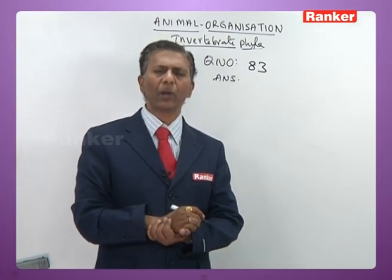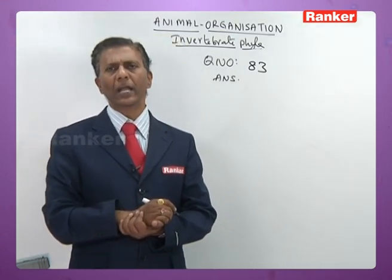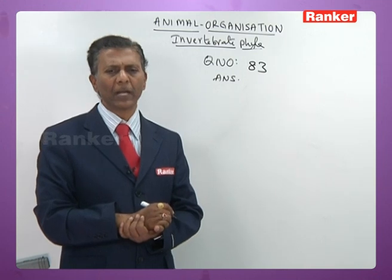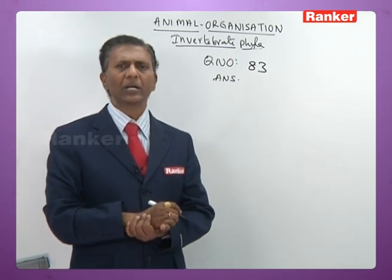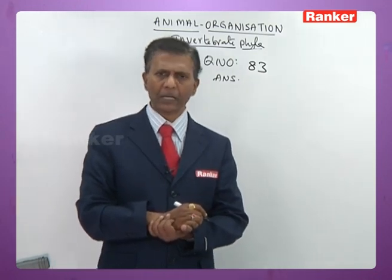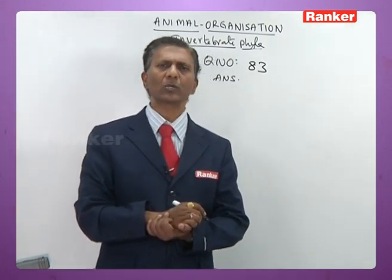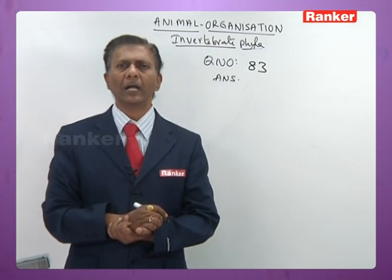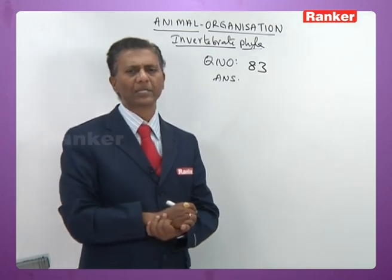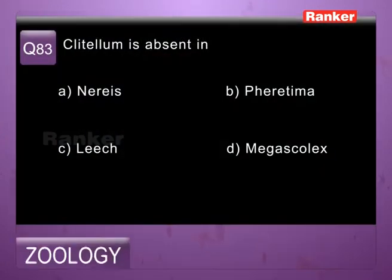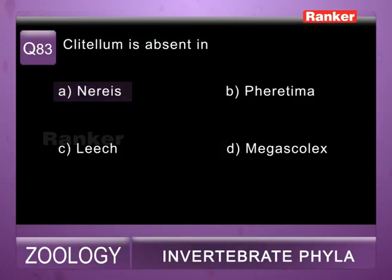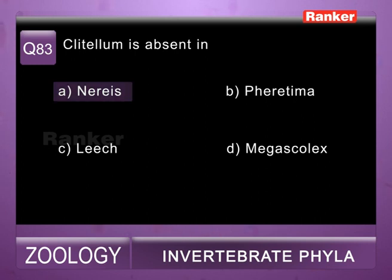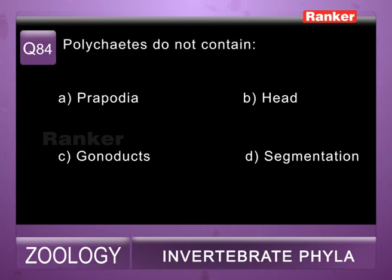Question eighty-three: clitellum is absent in — a) Nereis, b) Pheretima, c) leech, d) Megascolex. Pheretima and Megascolex both belong to Oligochaeta — clitellum is permanent. In leeches clitellum is temporary. In Nereis, which belongs to Polychaeta, clitellum is absent. So eighty-third question correct answer is a) Nereis.